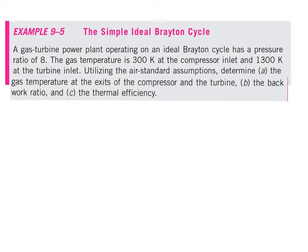Alright class, this is an example taken from your textbook on the simple ideal Brayton cycle. A gas turbine power plant operating on an ideal Brayton cycle has a pressure ratio of 8. The gas temperature is 300 Kelvin at the compressor inlet and 1300 Kelvin at the turbine inlet. Utilizing the air standard assumptions, determine: (a) the gas temperature at the exits of the compressor and the turbine, (b) the back work ratio, and (c) the thermal efficiency.